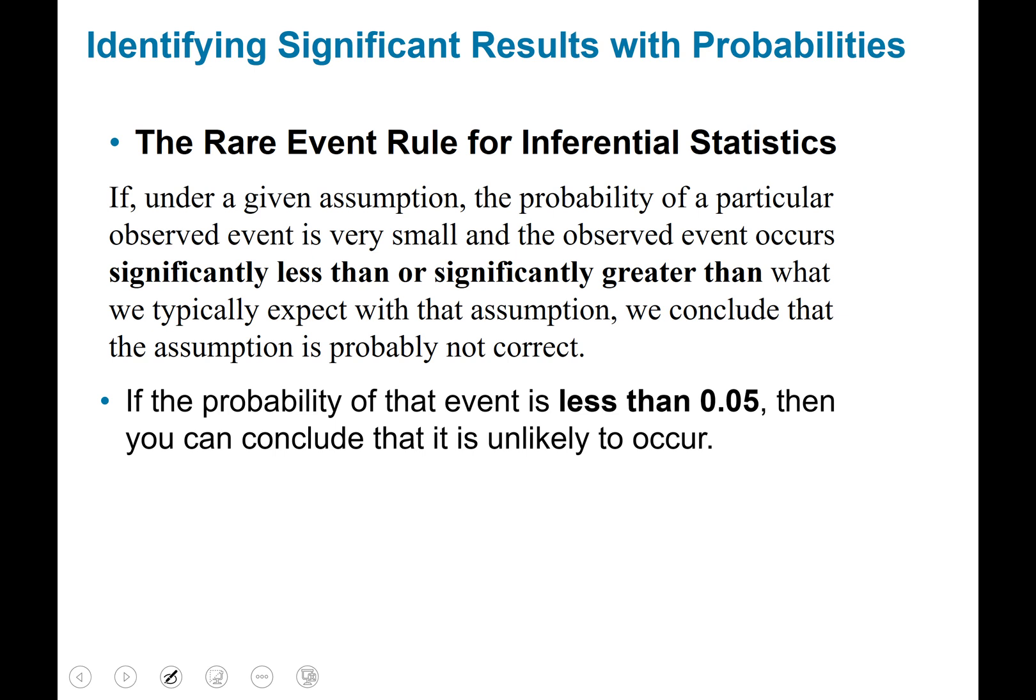All right let's break that down a little. If the probability of that event is less than 0.05, then you can conclude that is unlikely to occur. What I want you to really get out of this is probabilities less than 0.05 are unlikely to occur.